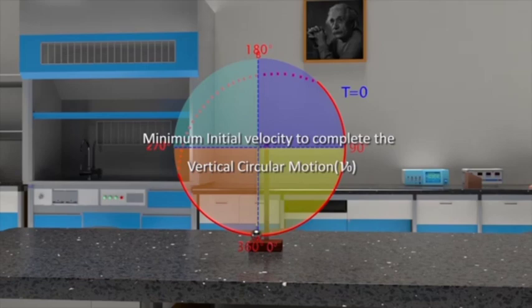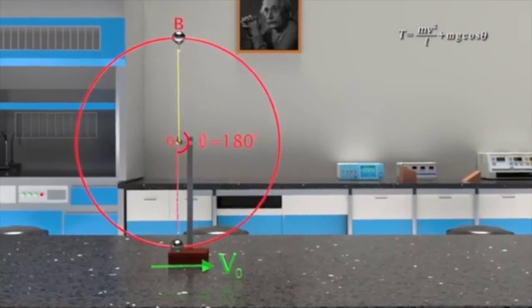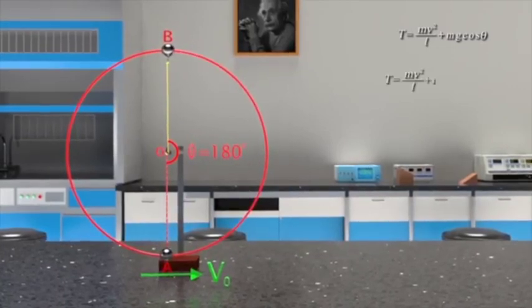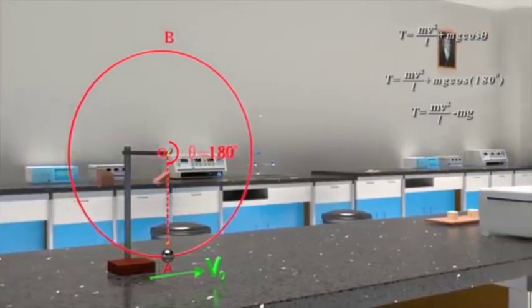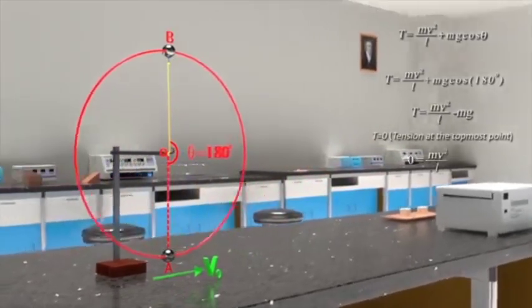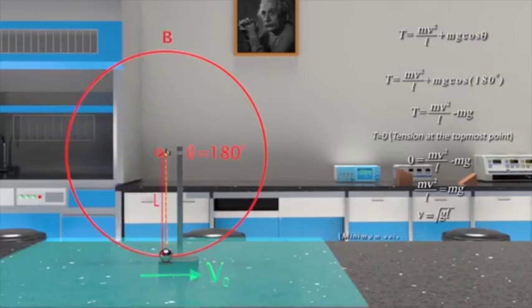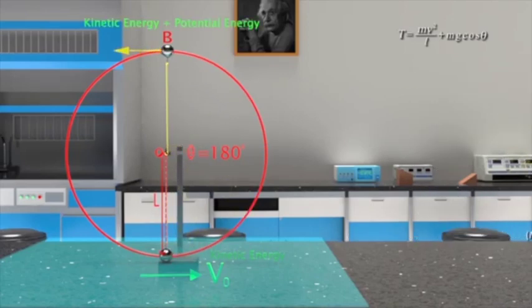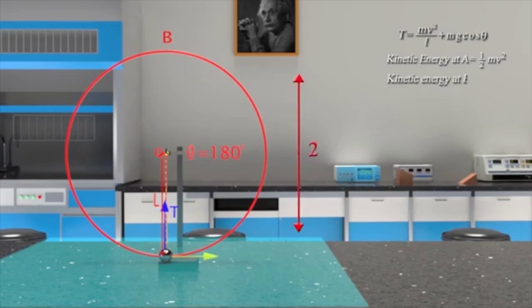Minimum initial velocity to complete vertical circular motion: consider the case where initial velocity is sufficient to complete the whole circle. At the highest point b, θ = 180°. Substituting into the tension equation gives T = mv² / l − mg. If initial speed is just sufficient to bring the bob to the highest point, tension at that point is zero. Therefore, mv² / l = mg, which gives v = √(gl). This is the minimum velocity the bob can have at the highest point. Taking the lowest point A as reference, the bob has only kinetic energy at A, but kinetic and potential energy at the highest point.